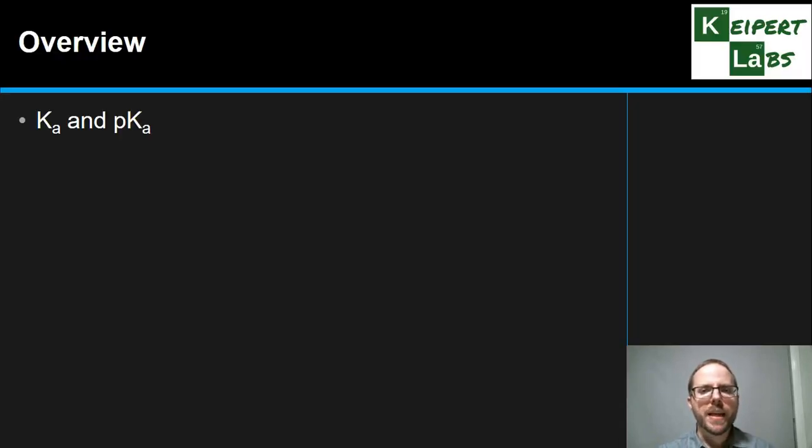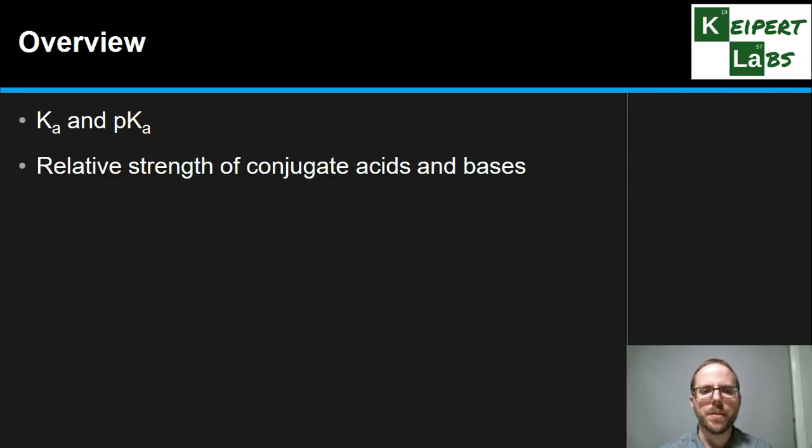So we're going to start by recapping what we mean by Ka and introducing this related concept called pKa. It will make a bit more sense in a moment. We're going to remind ourselves or help us to see how this informs us about the relative strength of conjugate acids and bases in an equilibrium and then introducing the close relative of pKa to pKb and seeing how that connects with these conjugate acid-base pairs.